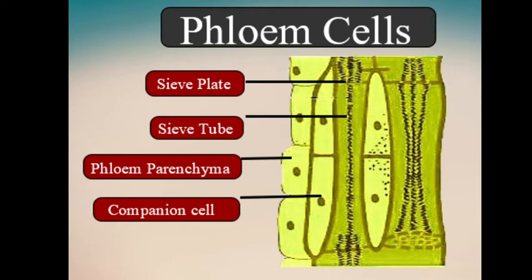Phloem contains sieve tubes. As you see in your screen, there are sieve tubes. Like xylem vessels,